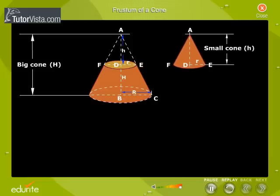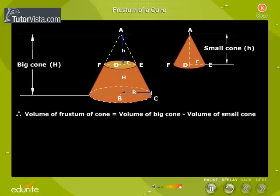The figure shows a cone being cut. The frustum of a cone is given by the difference between the volume of the cone that is cut and the volume of the cone that is obtained. Volume of frustum of a cone is equal to volume of the big cone minus volume of small cone.